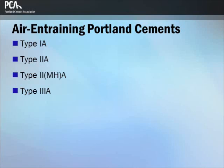Specifications for four types of air-entraining Portland cement are given in ASTM C150 and AASHTO M85. They correspond in composition to ASTM types 1, 2, 3, MH, and 2, except that small quantities of air-entraining additions are interground with the clinker during manufacture. These cements produce concrete with improved resistance to freezing and thawing. Air entrainment for concrete is generally achieved through the use of an air-entraining admixture, rather than through the use of air-entraining cements.